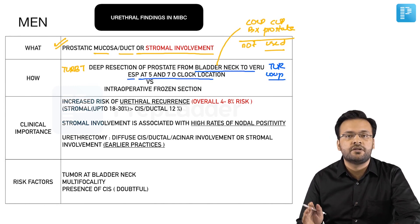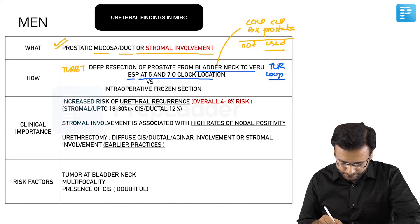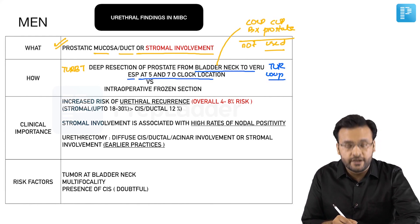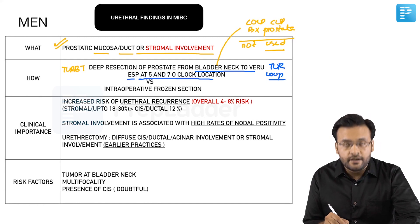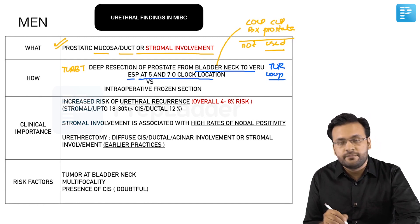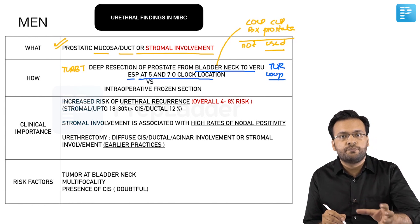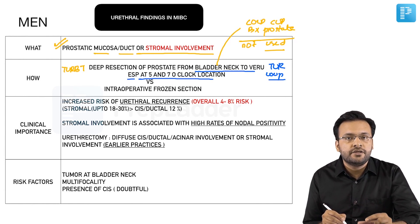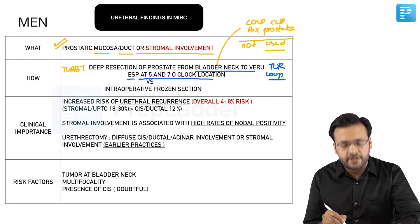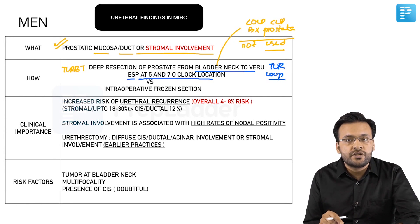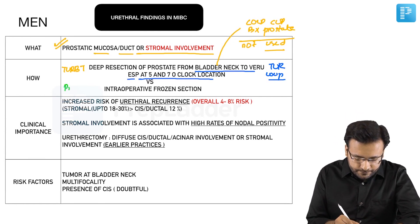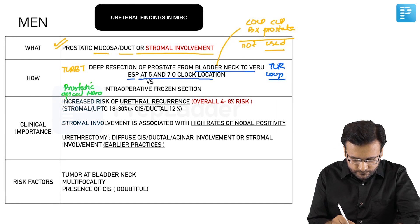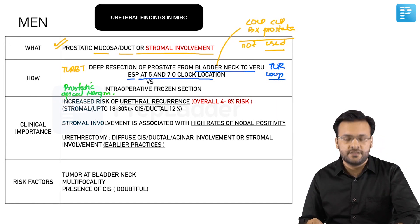A transurethral resection using a resectoscope loop, cutting from the bladder neck to the verumontanum at five and seven o'clock position, is required for assessment of prostatic urethral mucosa, acini, and ducts as well as stromal involvement. Clinicians can also choose to evaluate the urethra during radical cystectomy — after cystoprostatectomy, the urethra at the prostatic side is resected and sent for frozen section to evaluate for the prostatic apical margin.